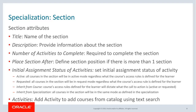The specialist can then set the initial assignment status of activities, which can be Active, Requested, Inherit from Course, or Inherit from the Specialization. For example, if Active is chosen, all the courses in the section will be active regardless of the course access rule defined for the learner. This setting can help drive assignment from the specialization rather than the individual courses.